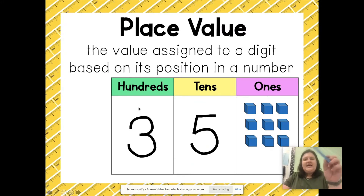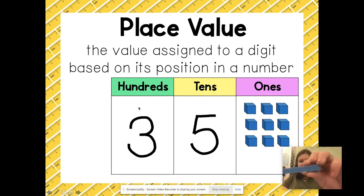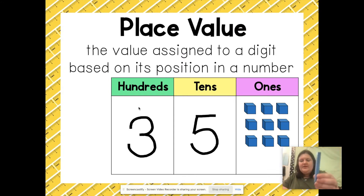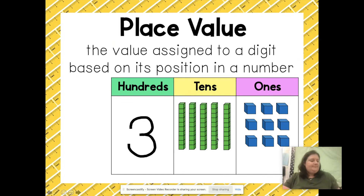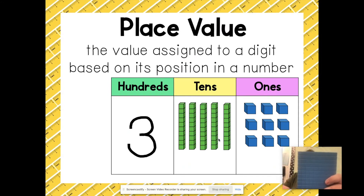I can also have a tens rod — one of these where there are ten ones put together, stacked on top of one another. I can have five of these, and those five represent the five tens I have, or 50. I can also use a flat.